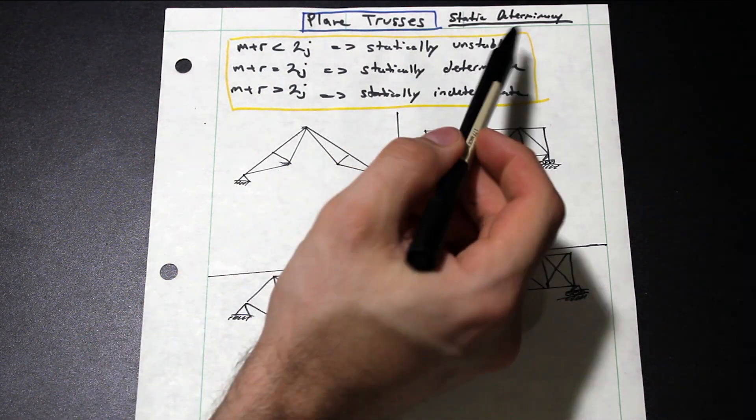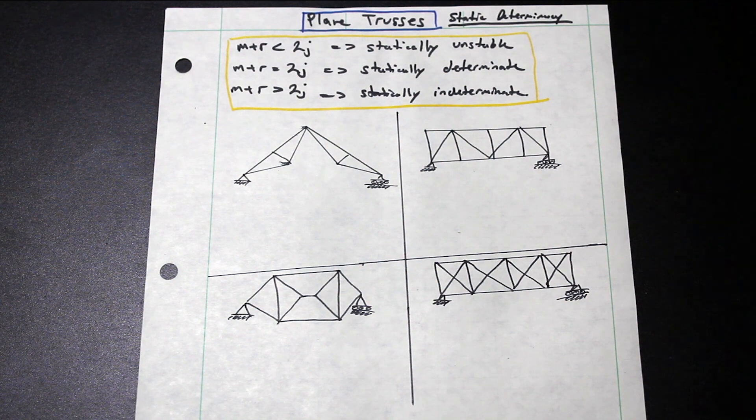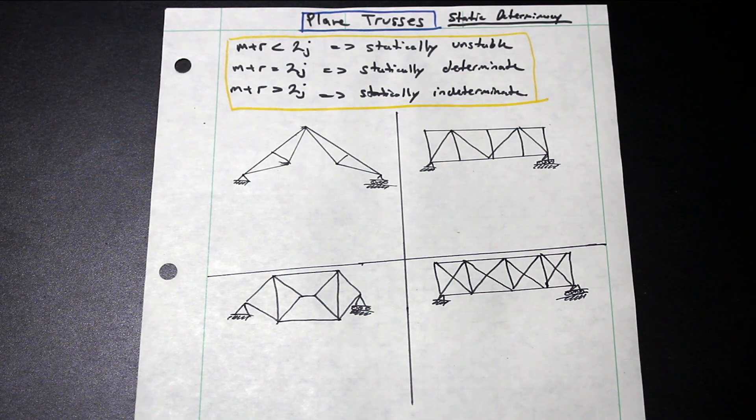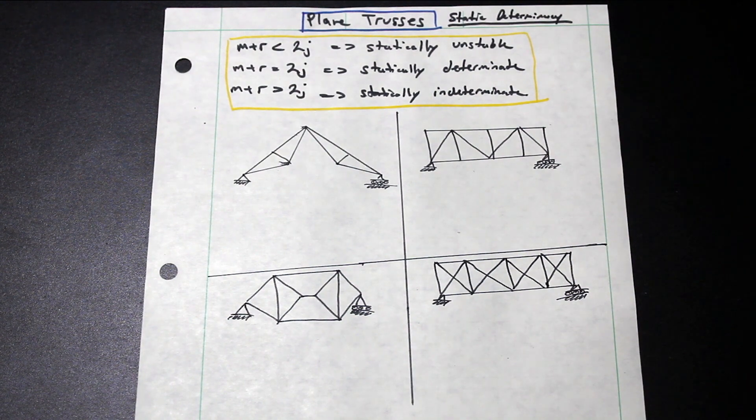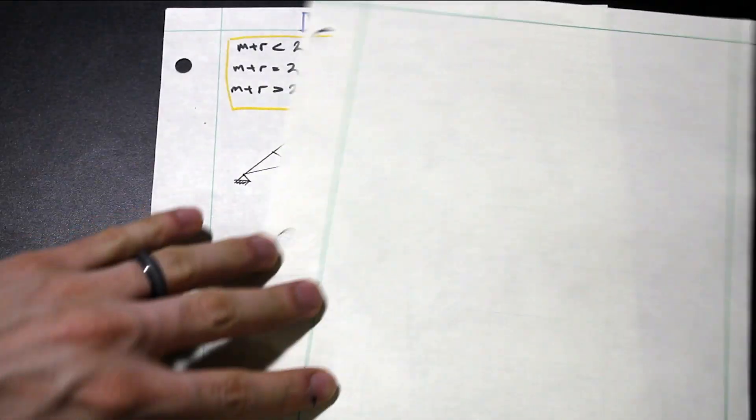This video specifically is not on internal stability. So we're not checking to see if the trusses have enough members in order to be stable. We're checking its external stability. So if the number of unknowns that we need to solve for is equal, less than, or greater than the number of equilibrium equations that we can generate.